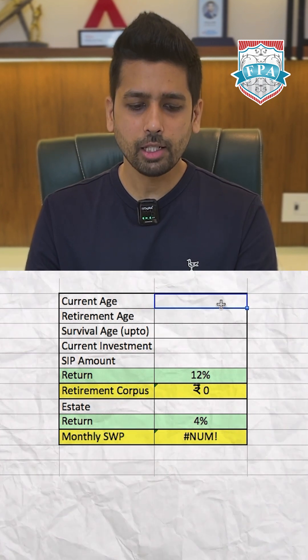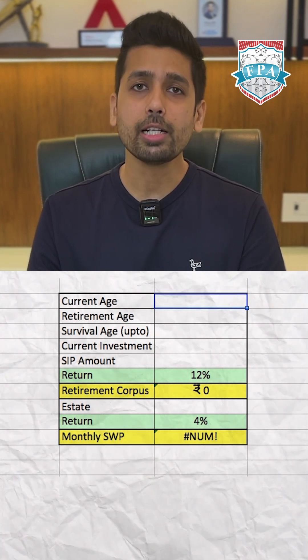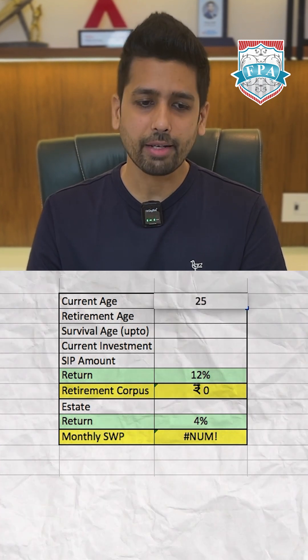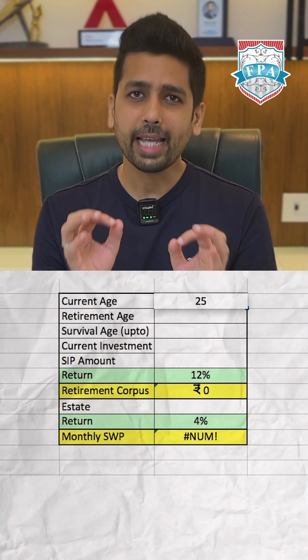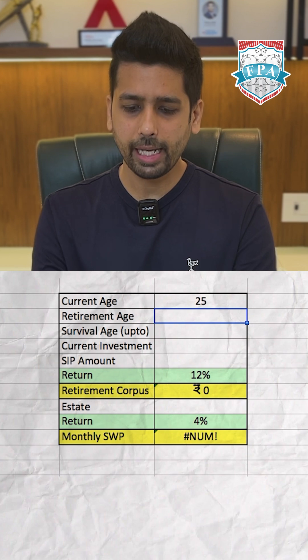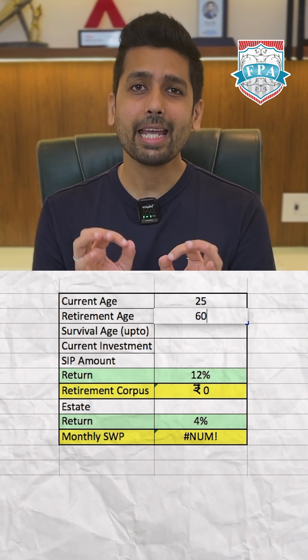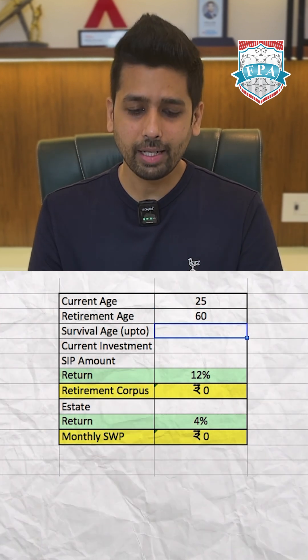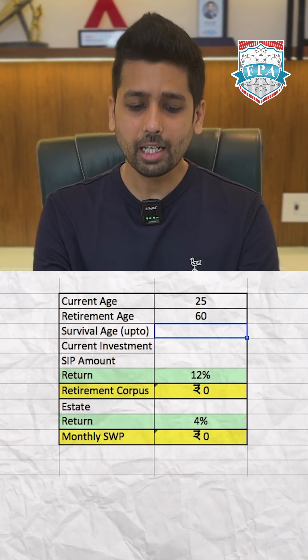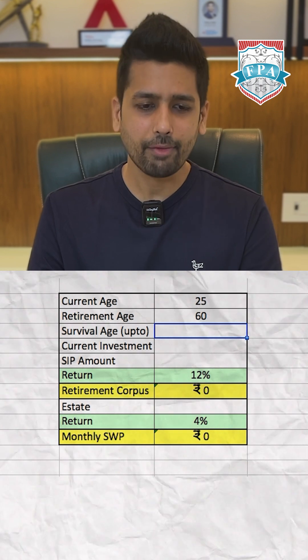Here is how you use the tool. In the first section, you mention your current age — let's say 25 — then your retirement age, let's say 60, and then your survival age, let's assume 85.